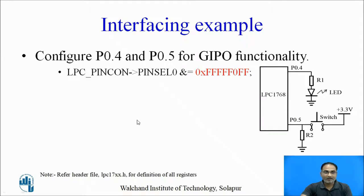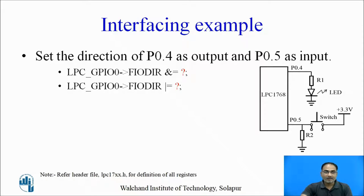The value we will get is 0xFFFFFF0FF. This statement configures these two pins for GPIO functionality. Next, set the direction of these two port pins. The LED is connected to P0.4 and is an output device, so P0.4 should be configured as output. A switch is connected to P0.5, so P0.5 should be configured as input. Let us calculate the two values which configure these pins for the desired direction.